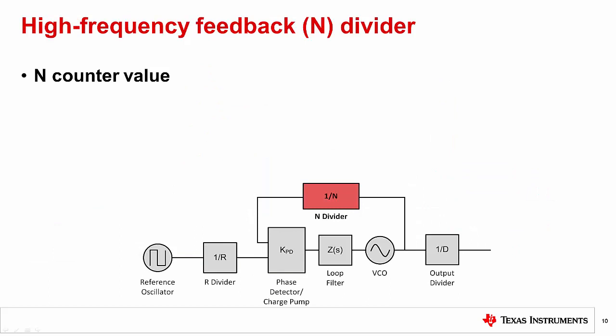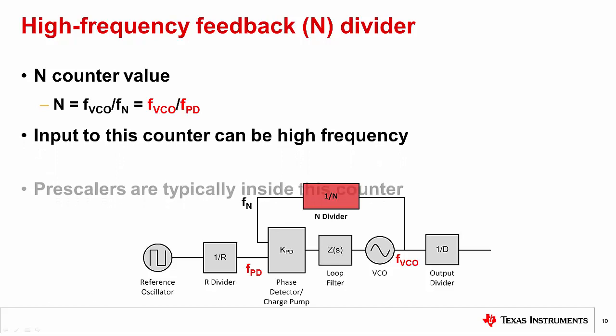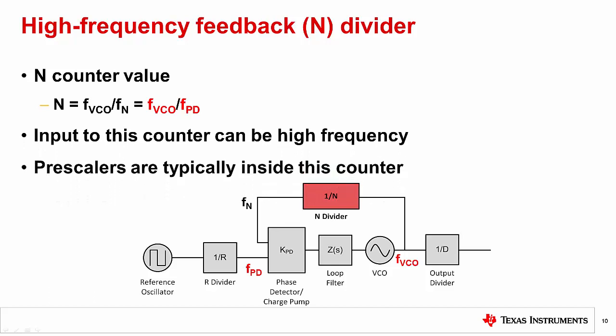The N counter value is determined by dividing the VCO frequency by the phase detector frequency.